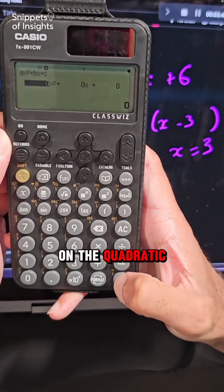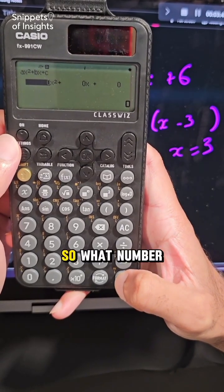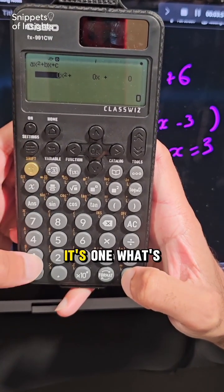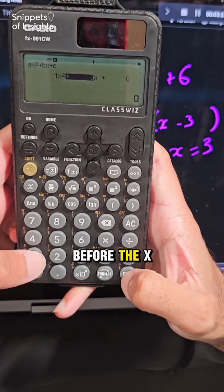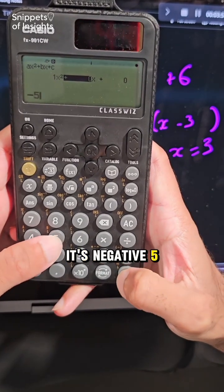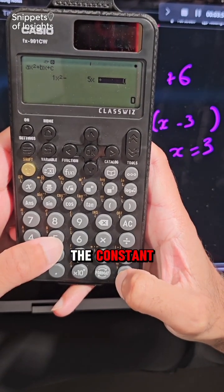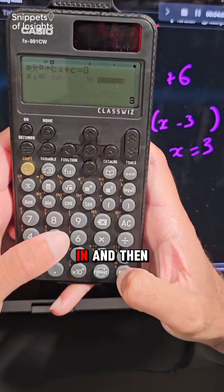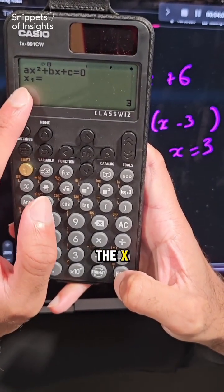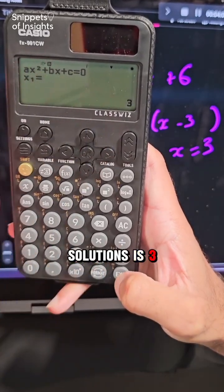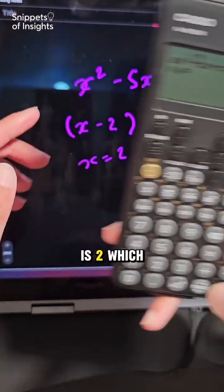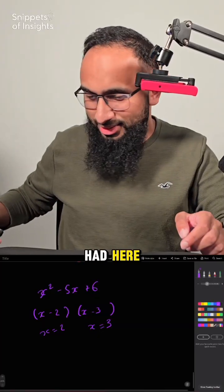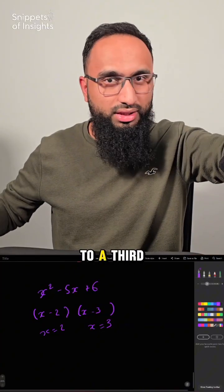So we click on the quadratic. What number is before the x²? It's 1. What's before the x? It's negative 5. And what is the constant? It's positive 6. We plug those in and it gives us the solutions. One of the solutions is 3, the other solution is 2, which is what we had. Let's move on to a third example.